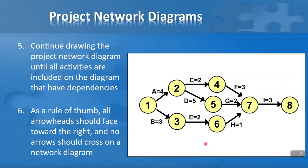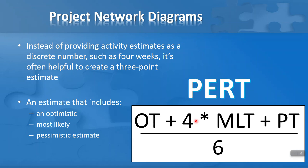We have several numbers on our arrows indicating duration. We could have accurate estimates of each activity, but instead of providing a discrete number, it's often helpful to create a three-point estimate using the PERT weighted average. PERT stands for Program Evaluation Review Technique. The formula takes into account the optimistic time (OT), the most likely time (MLT), and the pessimistic estimate (PT) for an activity, giving us a weighted average. This is very useful when there's disagreement on the duration of an activity. More on this in a later lesson.